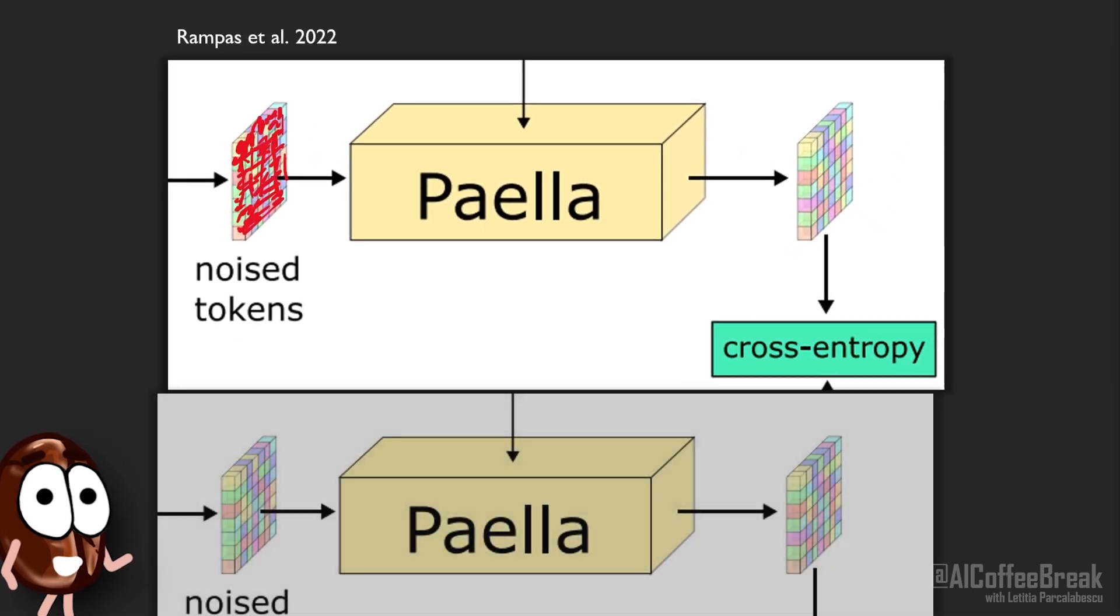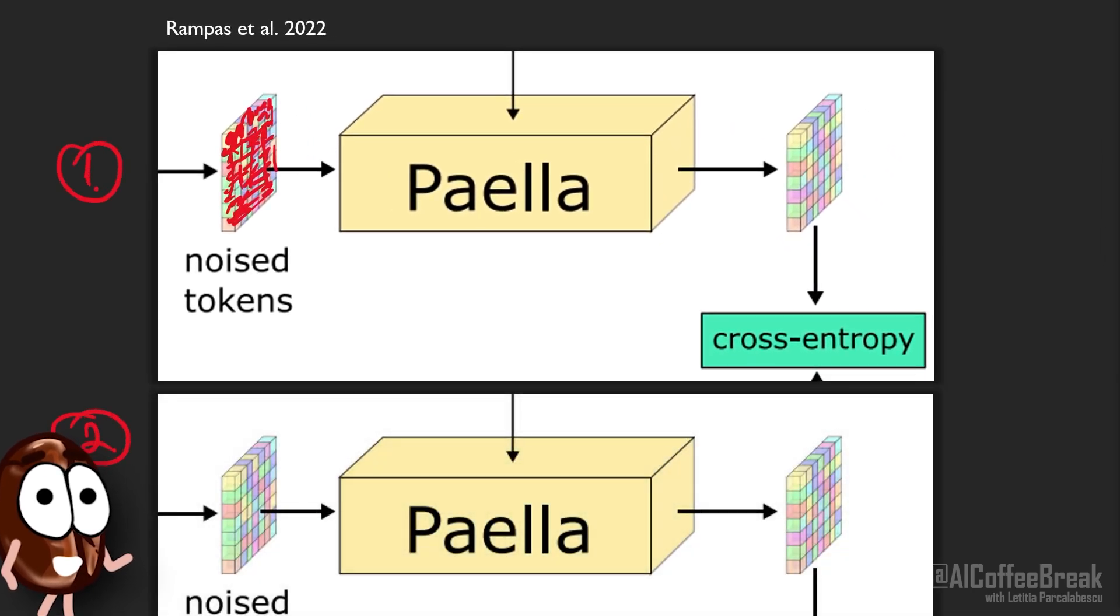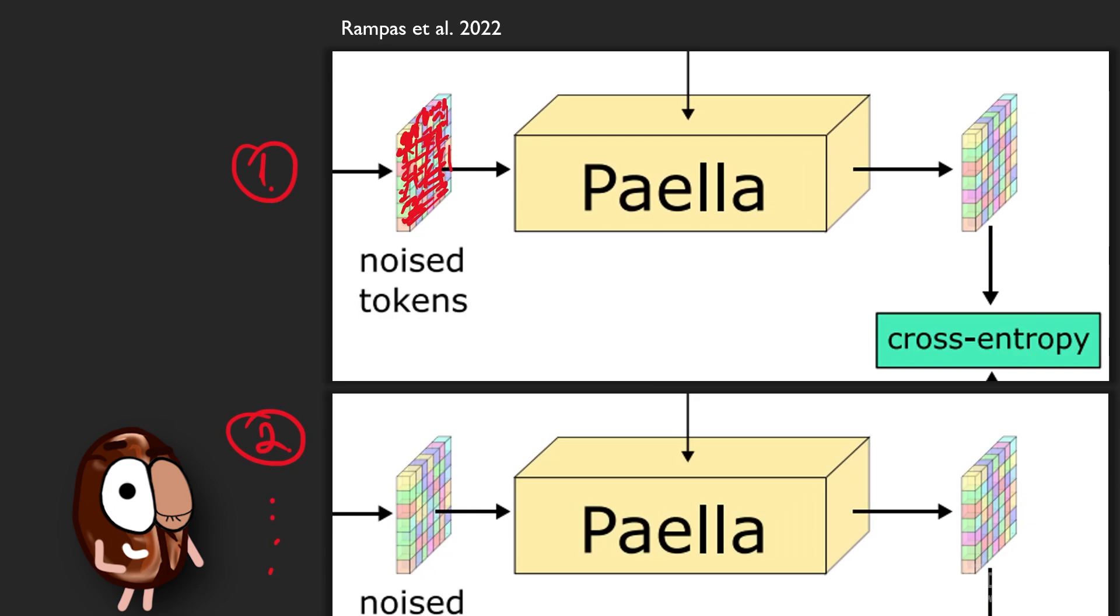Steps sound diffusion-like, but it is actually more similar with masked language modeling. At each step, the authors denoise everything, but randomly re-noise tokens again, to give the model a chance to denoise these based on the already predicted tokens.